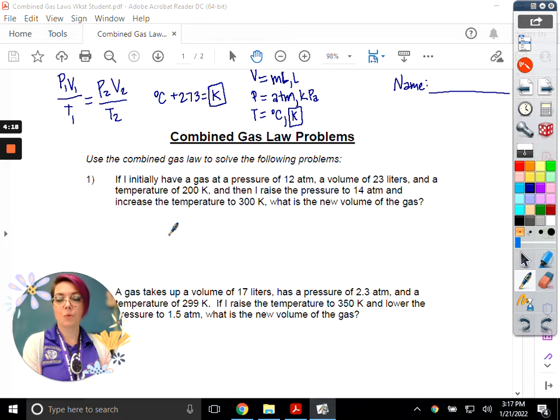What I like to do always with word problems is embrace the story. So we are going to look at this word problem like it's a story. I'm going to read it for the plot line first. So when I do that first read-through, I ignore all of the words that have to do with the numbers so that I get an idea of what is going on. If I initially have a gas at this pressure and volume and temperature, and then I raise the pressure and increase the temperature, what is the new volume of the gas? So I have a gas, then I'm going to raise the pressure and the temperature.